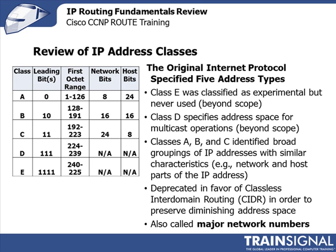You can see the table to the left lists leading bits, octet range, network bits, host bits, and those sorts of things. Class E is largely irrelevant. Class D specifies address space for multicast operations. We talked about unicast, broadcast, and multicast — multicast is beyond the scope of what we'll be discussing in IP routing, but it does have functionality that we'll talk about later.